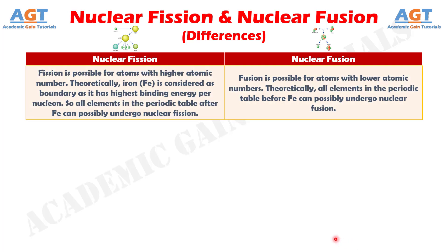Number seven: fission is possible for atoms with higher atomic number. Theoretically, iron is considered as the boundary as it has the highest binding energy per nucleon. So all elements in the periodic table after iron can possibly undergo nuclear fission. Whereas fusion is possible for atoms with lower atomic numbers — theoretically, all elements before iron can possibly undergo nuclear fusion.